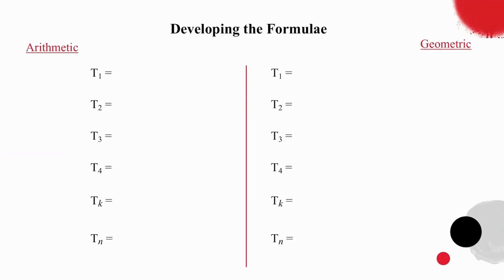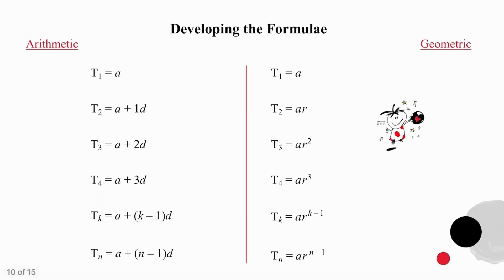Using only the values of a, d, and r, see if you can complete all the missing values in this slide. Starting with a, the second term will be a plus 1 difference, the third term will have 2 differences added on, the fourth term 3 differences. The term in position k will simply have k minus 1 differences added on, and the term in position n will have n minus 1 differences added.